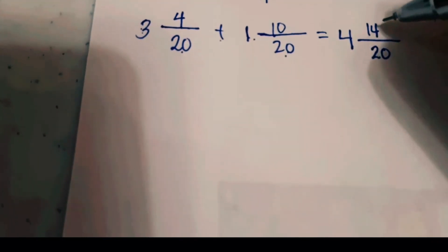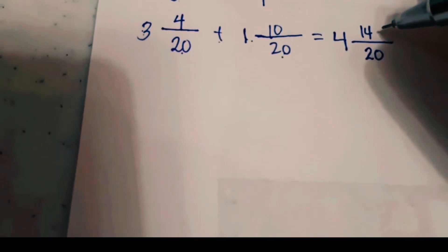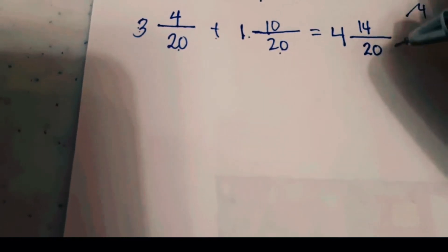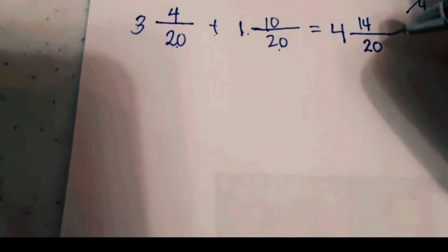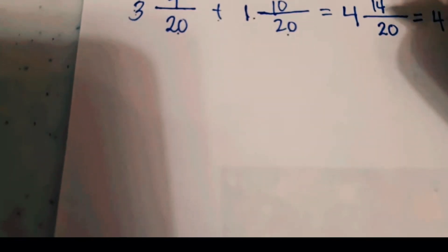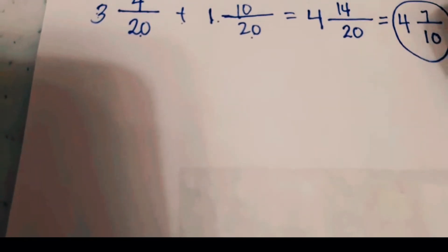Before finalizing your answer, examine the fraction. The numerator is smaller than the denominator, so all is well. Now check if there is a number that divides both 14 and 20. That number is 2. When reducing a mixed number to lowest term, copy the whole number first. Then: 14 divided by 2 equals 7, and 20 divided by 2 equals 10. Your final answer is 4 and 7/10.